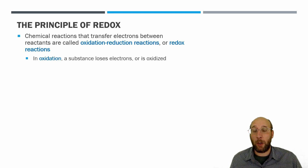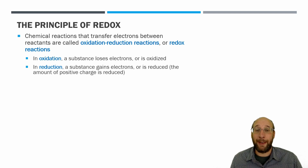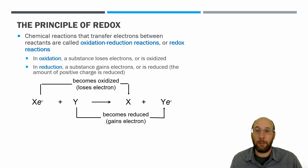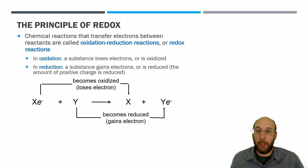An oxidation reaction is where a substance loses electrons or is oxidized. In reduction, a substance gains electrons or is reduced — that is, it's reduced in the amount of positive charge. For instance, in this example X has an electron and loses it, so it becomes oxidized. Y gains an electron so it becomes reduced.